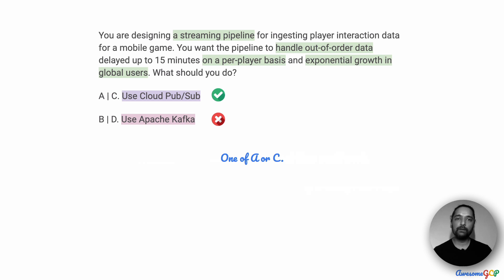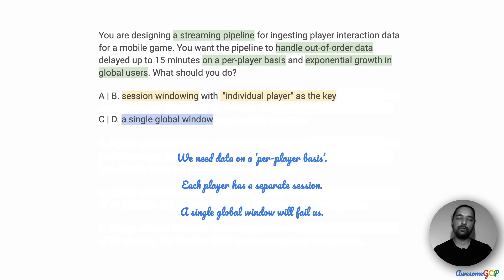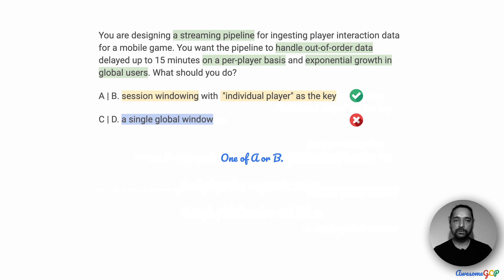The remaining choice is between A, which suggests session windowing with the individual player as a key, and C, which suggests a single global window. Looking at the requirement, we need data on a per-player basis. Each player has one session into the server. If we use a single global window with a total 15-minute window, that fails us because we ideally want to capture the delay on a per-player basis. So each player has a session, and therefore we should have a session window per player. A single global window will not work.